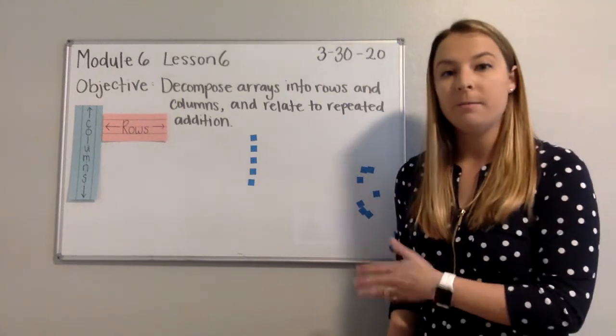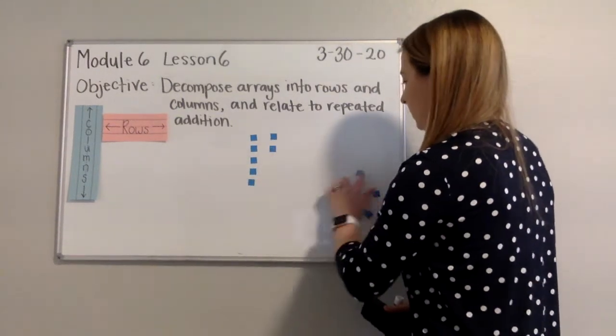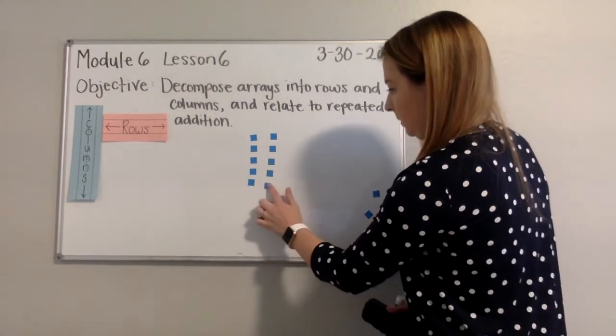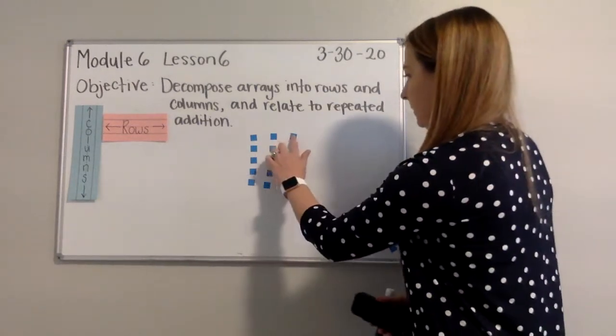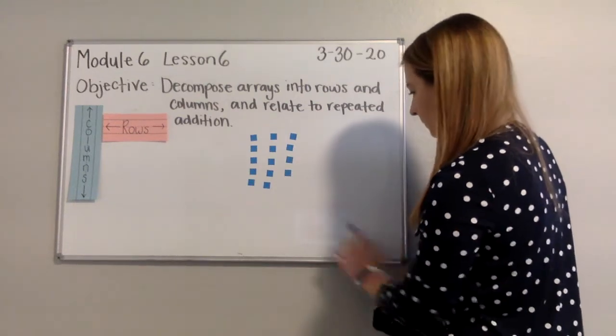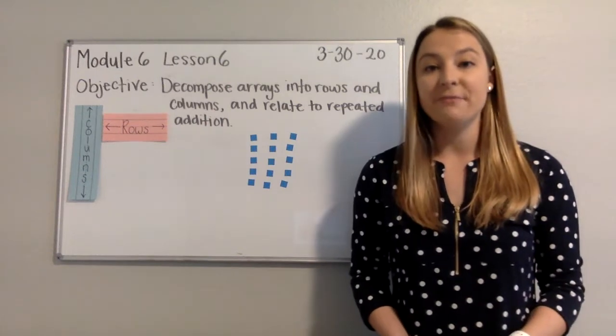Here I have one column of five. Now I have two columns of five. And I have three columns of five.